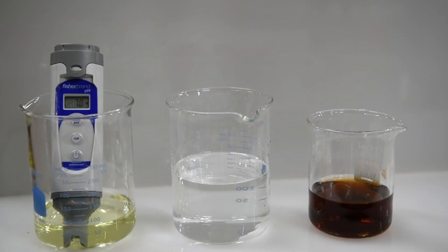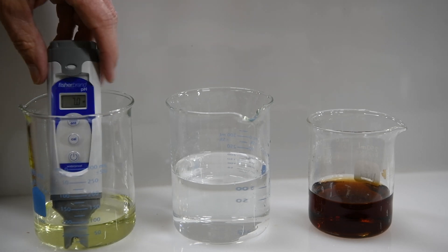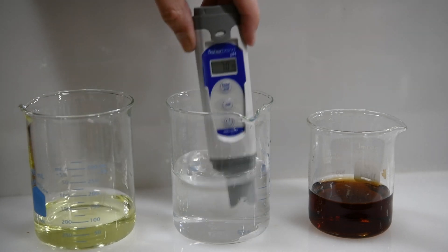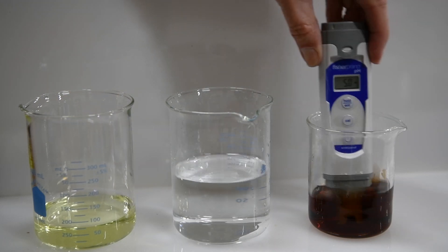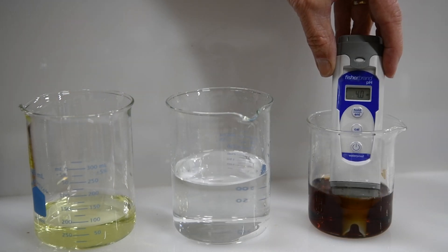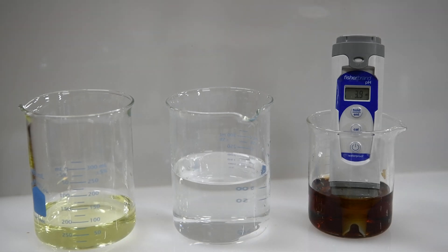Next, we'll test the sample of Diet Coke for comparison. So once again, we'll rinse off our pH meter, put it in the beaker of Diet Coke, give it a moment to steady. And it looks like we have a pH of about 3.9.